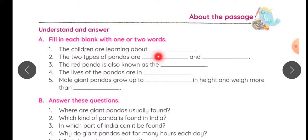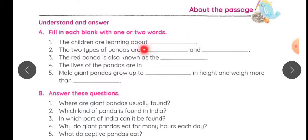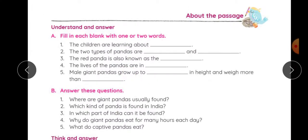You have to fill in the words in the blanks. The first blank is: the children are learning about — children kis ke baare mein pad rahe the, seekh rahe the — panda ke baare mein hai na. The two types of pandas — you have to write the names of the two types of pandas here, as given in your chapter.